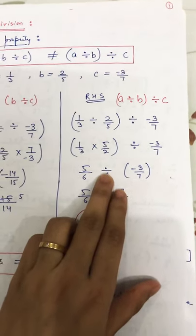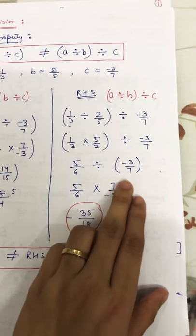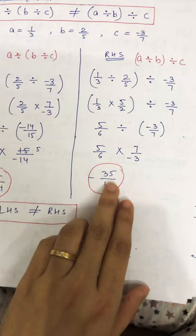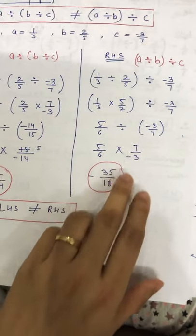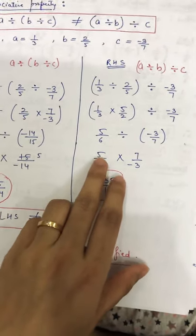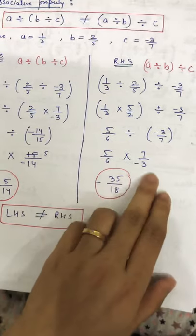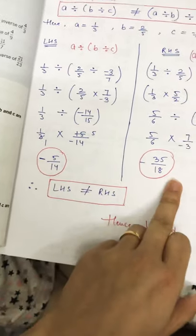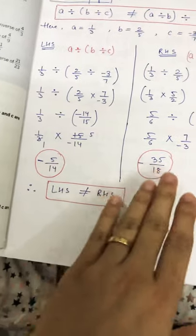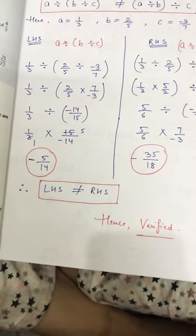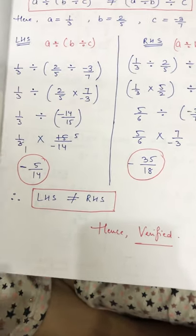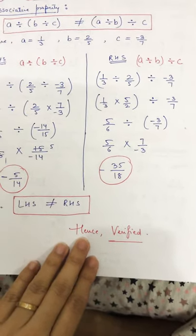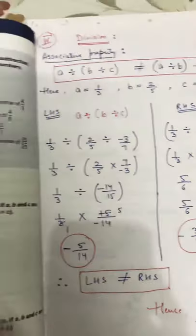5 by 6 is divided by minus 3 by 7. Remove the divide sign, put the multiply sign — it equals 7 upon minus 3. After multiplying: 7 times 5 is 35 and 6 times 3 is 18, and minus. Now check both values — this and this are totally different. So left hand side is NOT equal to right hand side, and hence it is verified.